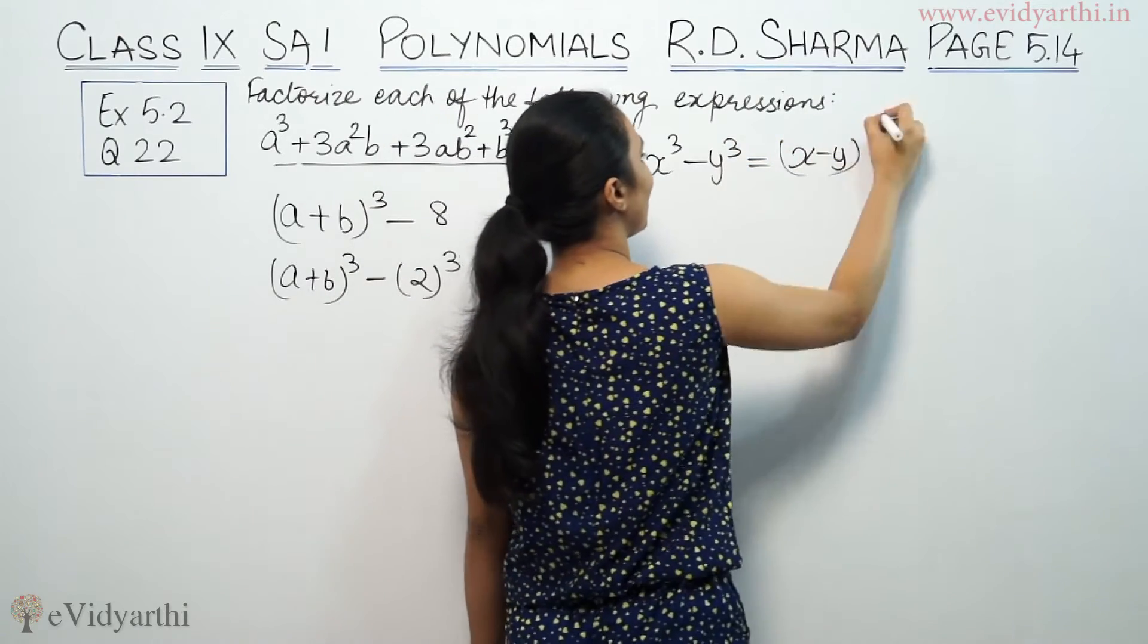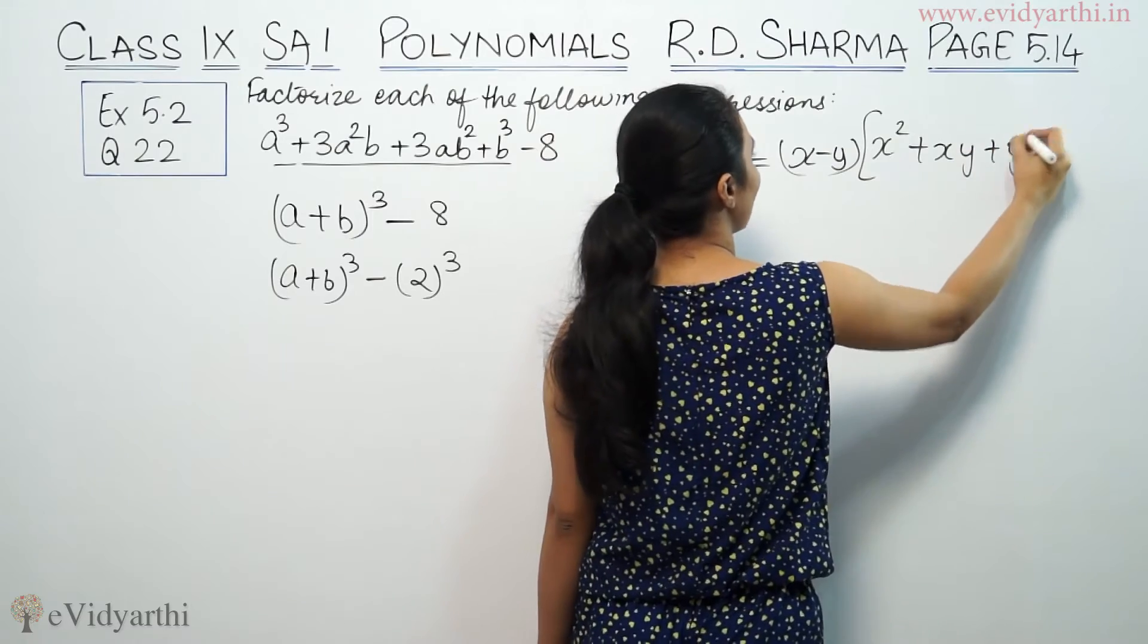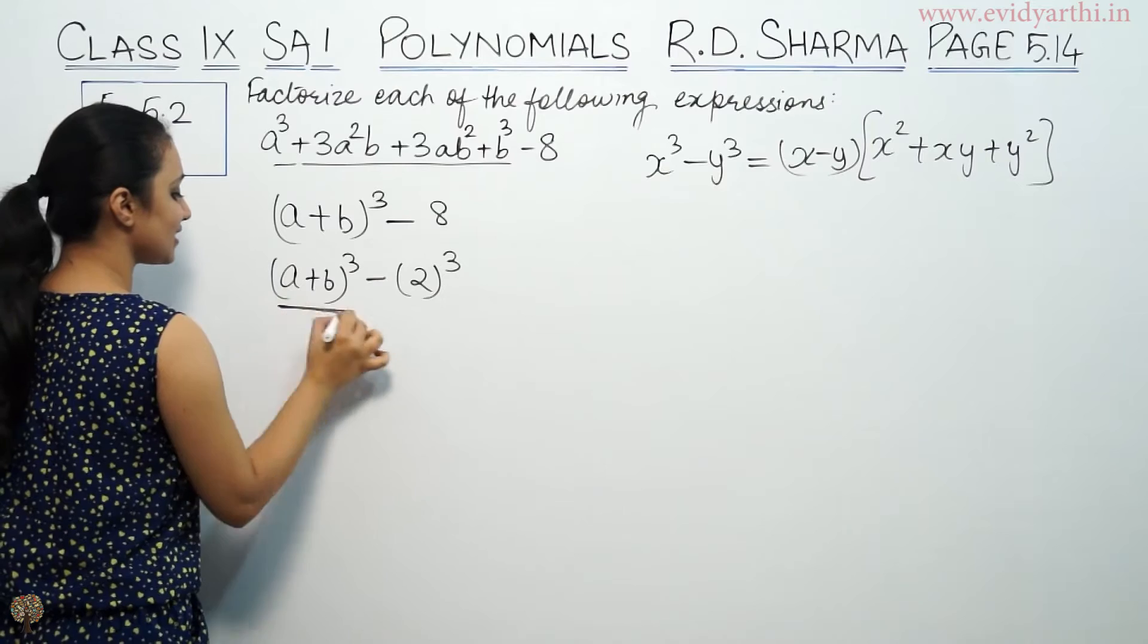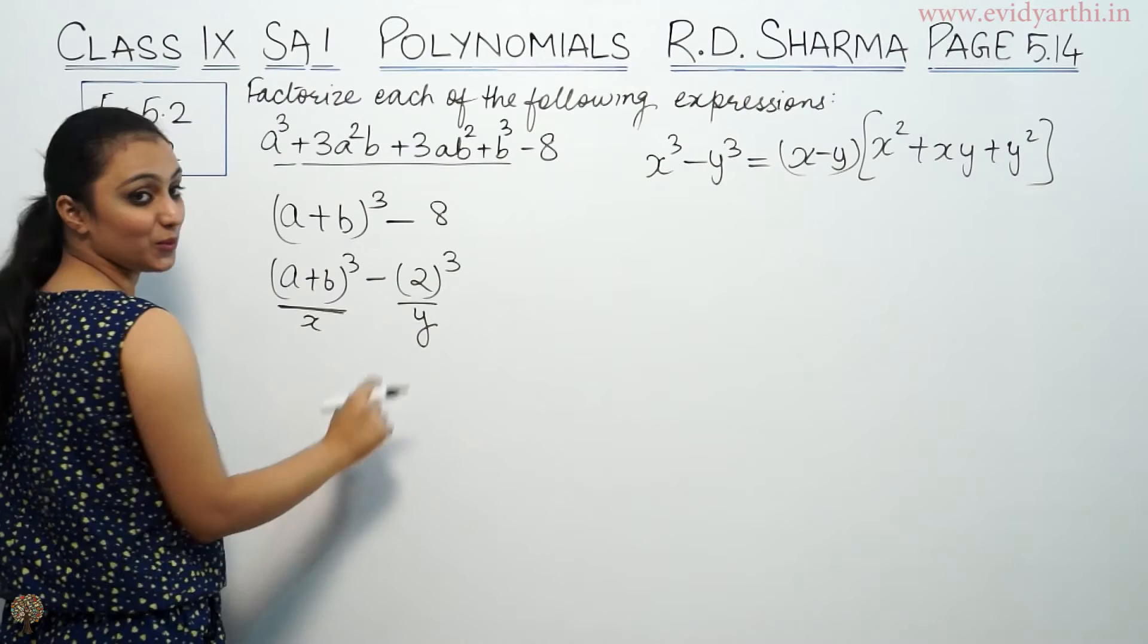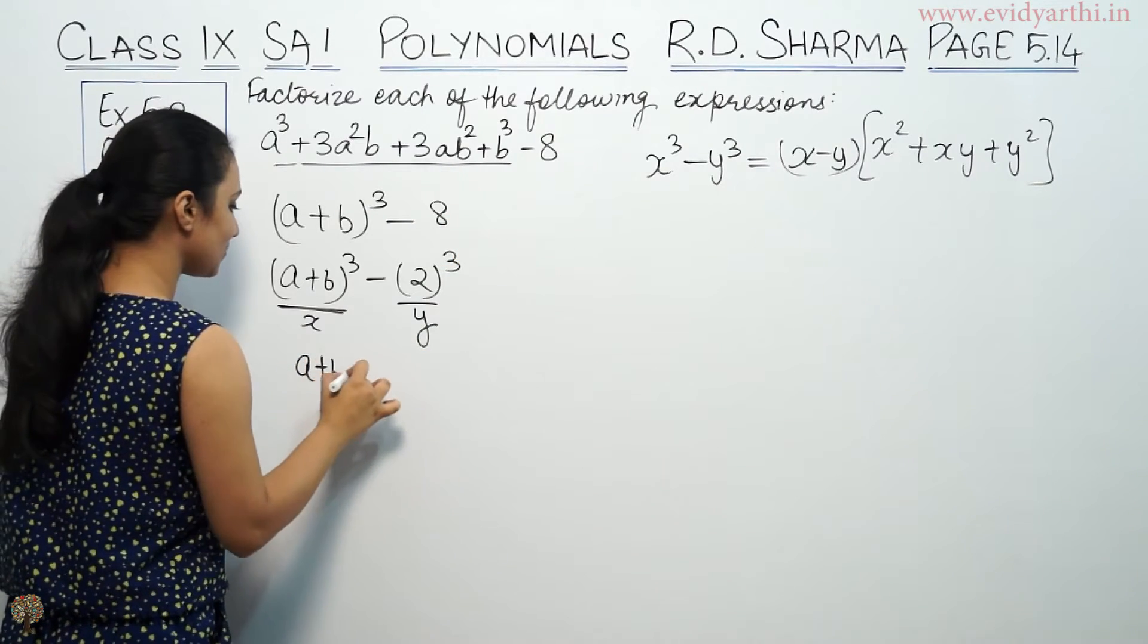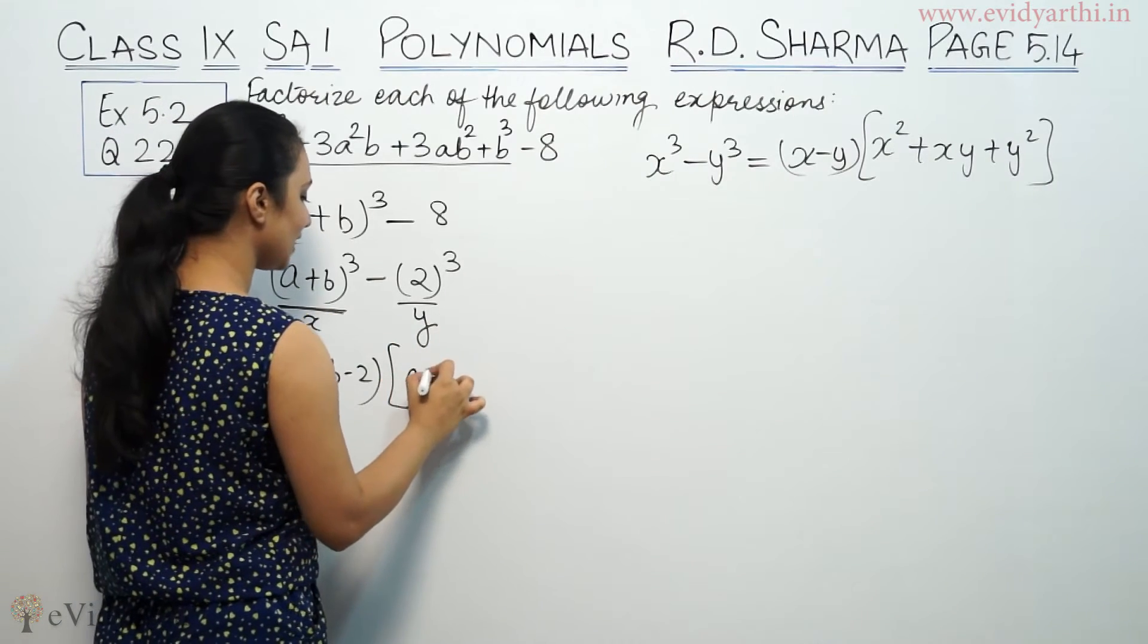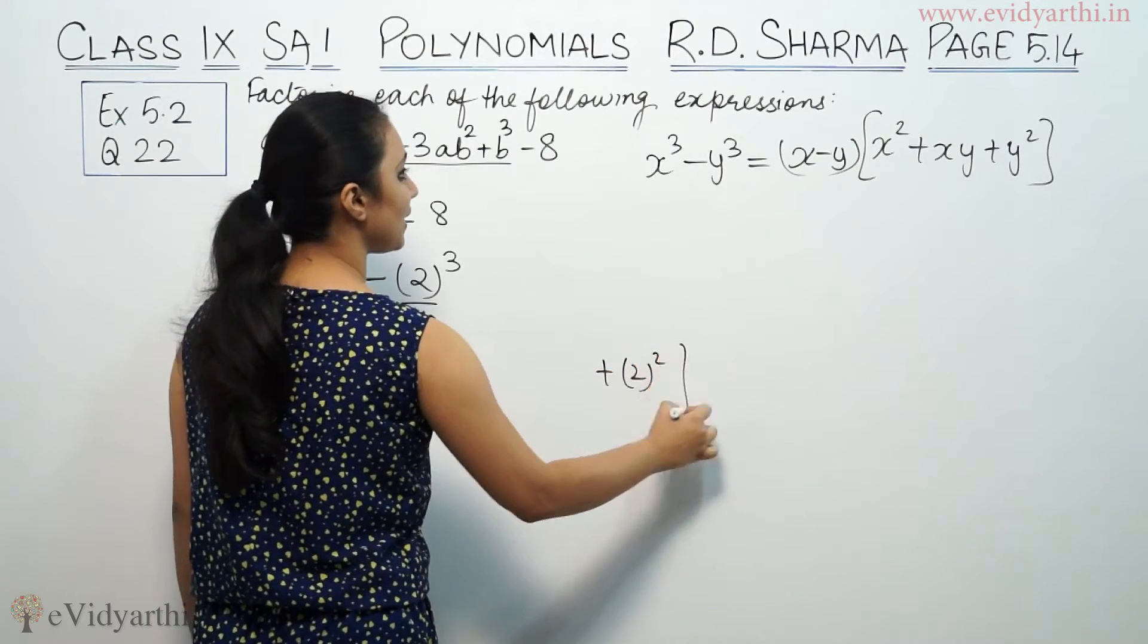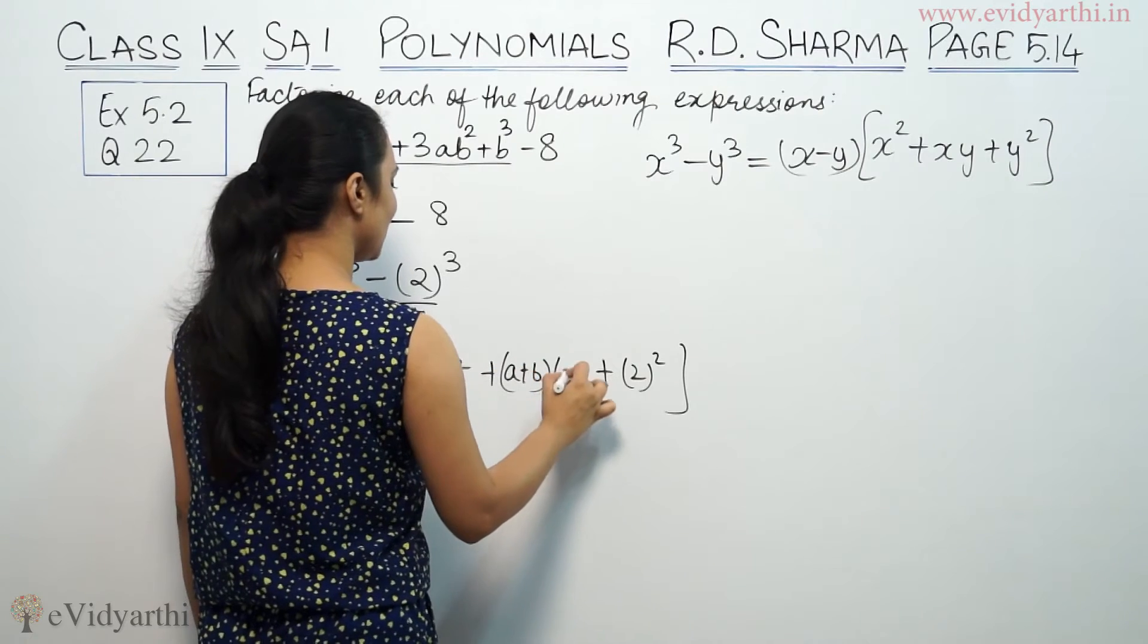Which is (x - y)(x² + xy + y²). So we have (a + b)³ - 2³. So we can write (x - y). That means (a + b - 2).